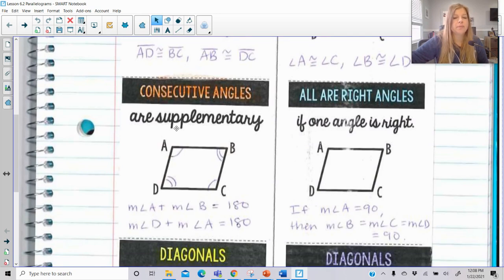Consecutive angles are supplementary. So we should remember that supplementary means that two angles have a sum of 180 degrees. Consecutive means one after another. So any pair of consecutive angles here, angle A and angle B add up to 180. Angle D and angle A would add up to 180. Angle C and angle D would add up to 180. C and B add up to 180. Any pair of angles that basically are one after another in a parallelogram are going to be supplementary to each other.